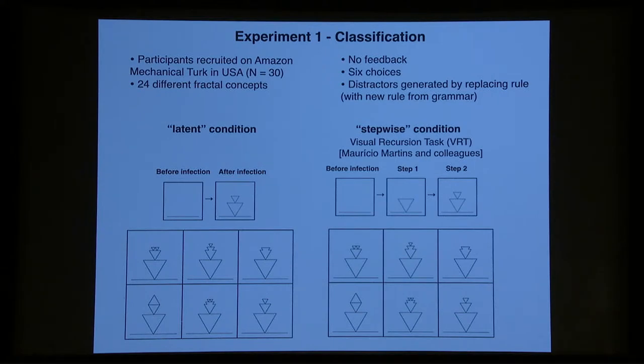There's two different conditions, a latent condition and a stepwise condition, where the latent condition, you just see the before and the after, and you have to predict how it's going to continue to grow, and the stepwise condition, where you actually see the series of steps of the crystal growing, and then you have to predict what the next step is, and participants were in one condition or the other.